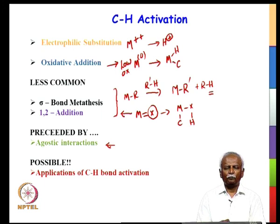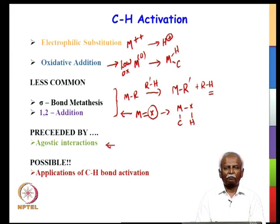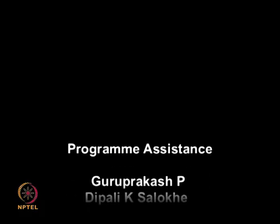In all these cases the reaction could be preceded by agostic interactions — these are systems where you have a weak interaction between the hydrogen of a C-H bond and the metal atom. If you want to observe the agostic interaction, you should have the metal in a high oxidation state where it is coordinatively unsaturated. Finally, we conclude with a positive note that there are possible applications of C-H bond activation — for example, the metathesis reaction as illustrated by Goldman and his group.